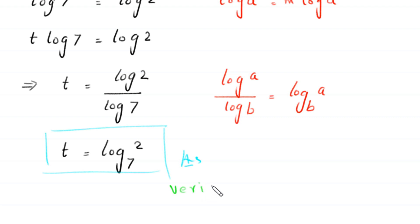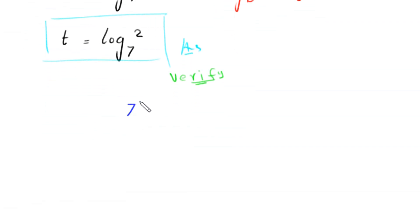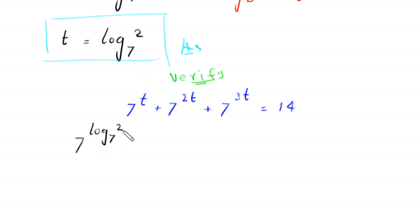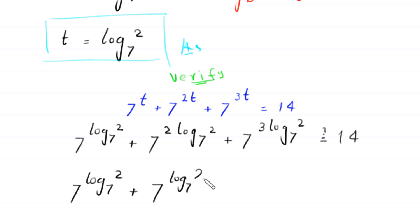Let's verify whether this solution is valid. We use the original equation: 7 to the power t plus 7 to the power 2t plus 7 to the power 3t equals 14. Replacing every t with log base 7 of 2, we get 7 to the power log base 7 of 2, plus 7 to the power 2 times log base 7 of 2, plus 7 to the power 3 times log base 7 of 2.